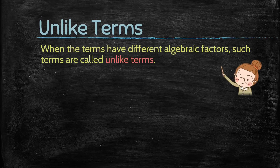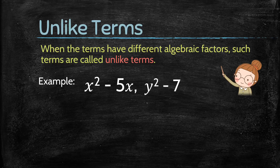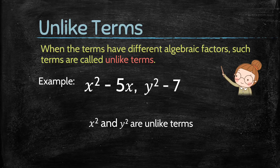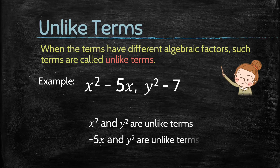Next, what are unlike terms? When terms have different algebraic factors, such terms are called unlike terms. For example, in the expression x squared minus 5x and y squared minus 7, x squared and y squared are unlike terms because they have different algebraic factors. Similarly, minus 5x and y squared are also unlike terms.